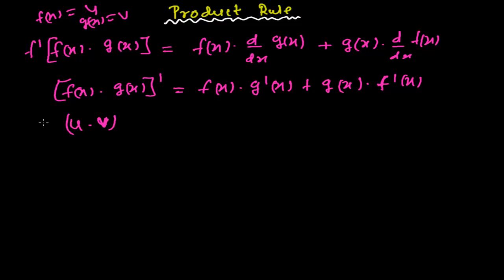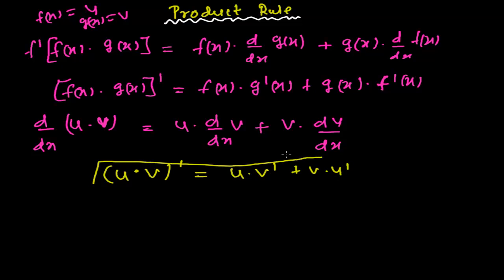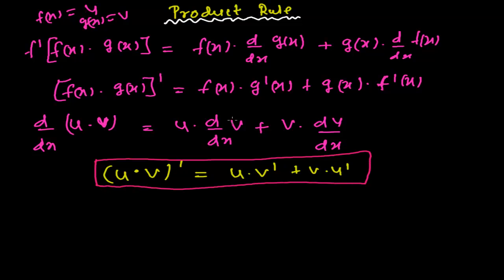So, what will be the derivative of u times v? d/dx of (u·v) equals first u times the derivative of v, again plus v times the derivative of u. Or simply: (u·v)' = u·v' + v·u'. That's the product rule — the derivative of the product of u and v equals u times the derivative of v and v times the derivative of u. Please keep this formula in your mind and let's start some problems related to this product rule.